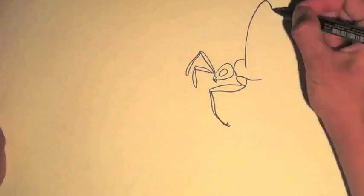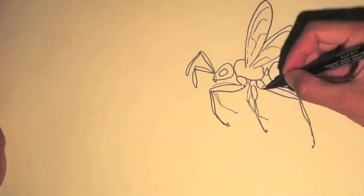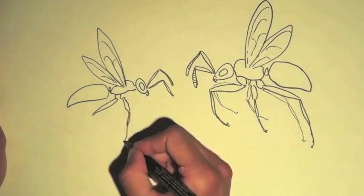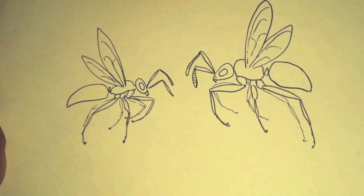Most ant colonies begin with a mating flight. When winged, virgin queen and male ants of the same species leave their parent colonies in large swarms, find each other by smell, and mate.